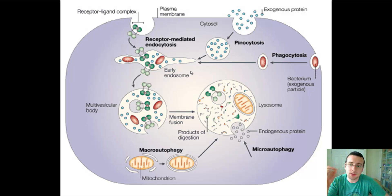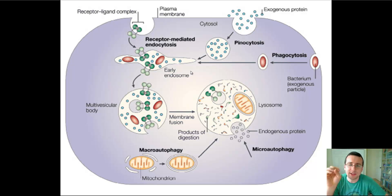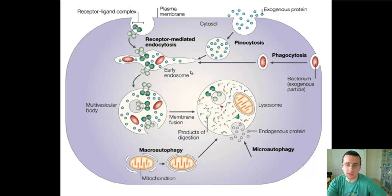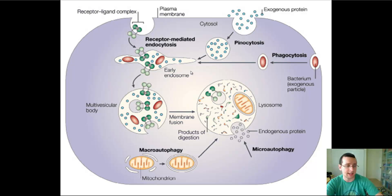The lysosomes can also swallow up proteins that are inside the cell itself — endogenous proteins, not proteins that come from the outside. That's called microautophagy, when the lysosomes swallow up pieces of the cell itself. They can also swallow large organelles in what's called macroautophagy — for example, when a mitochondria is destroyed because it's old and no longer doing its job, or when the cell goes into auto-destruct mode and the lysosome actually lyses itself and releases all its digestive enzymes to destroy the cell from the inside out.